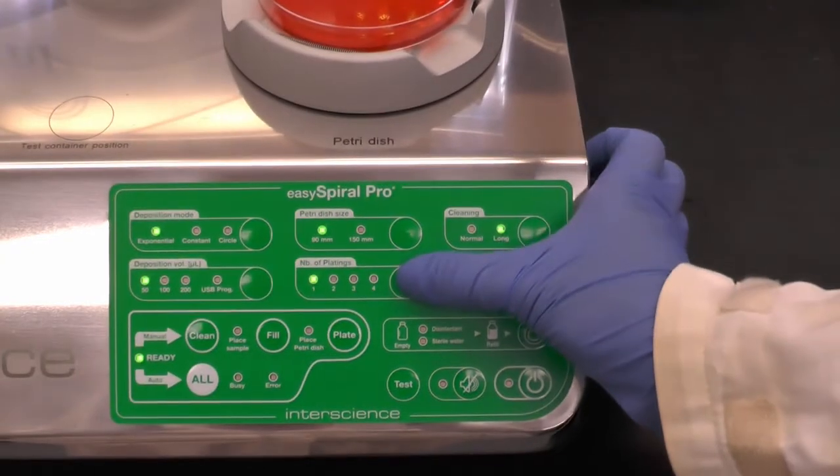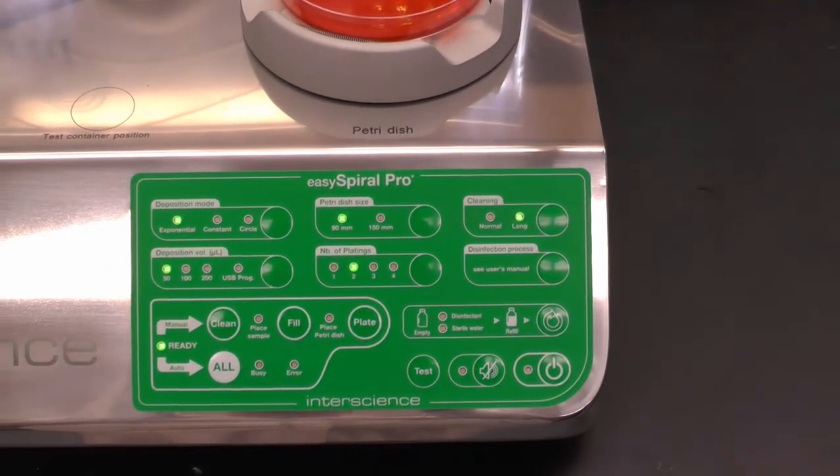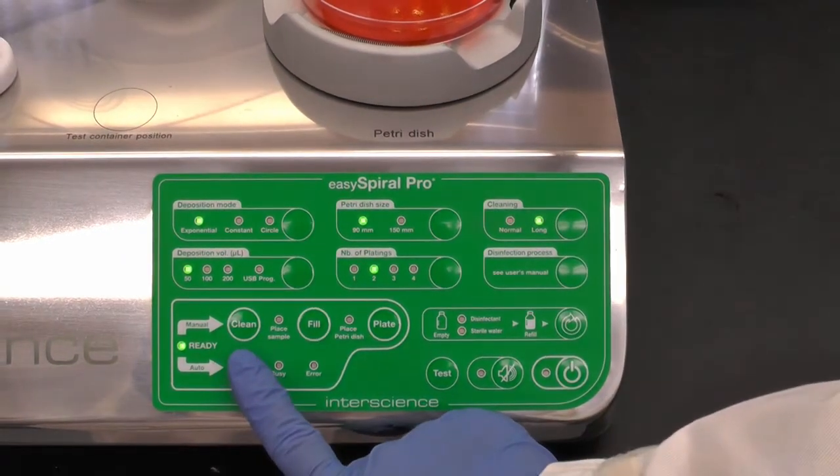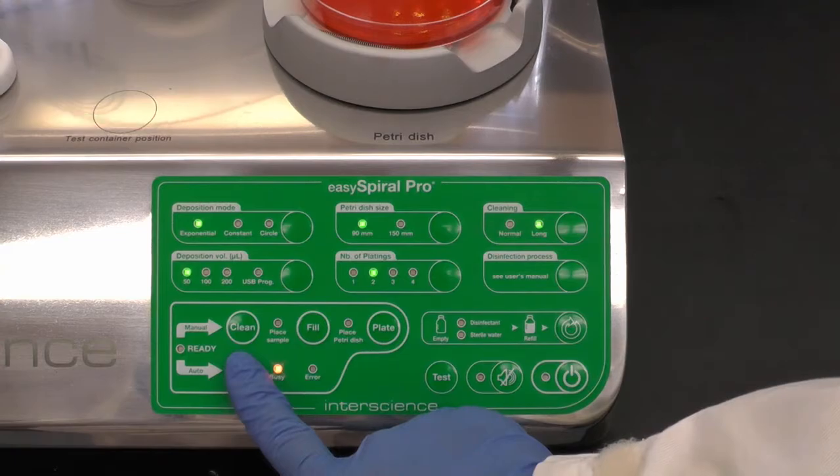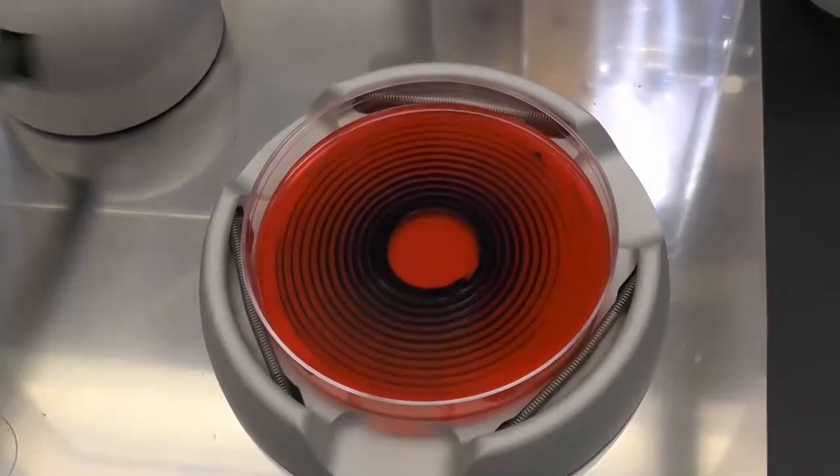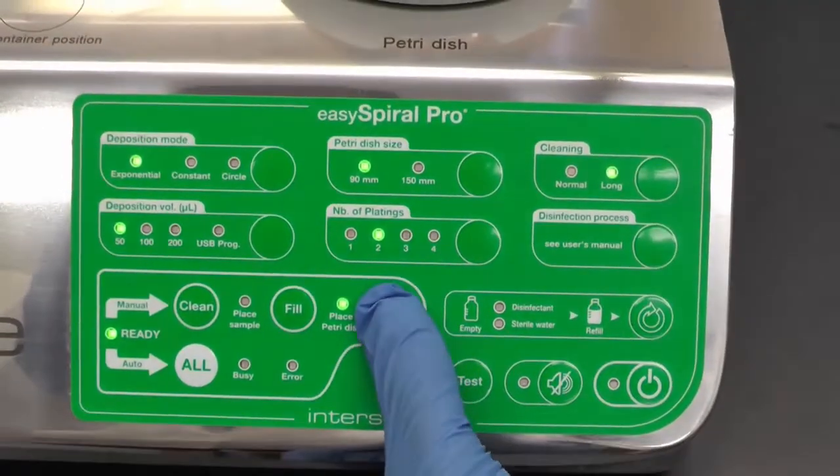If you want to plate multiple plates with the same sample in a row, you can set the number of plates option to two, three, or four on the control panel. With your sample and plate loaded, press all. After the first plating is complete, replace the first plate with a new agar plate and press the plate button. This setting can shorten the time needed for each plating.